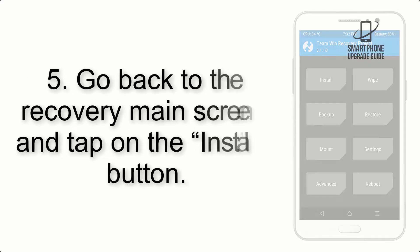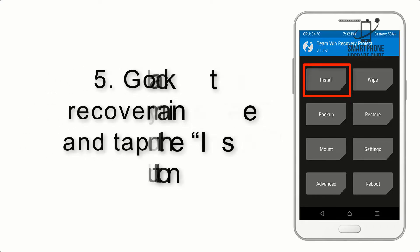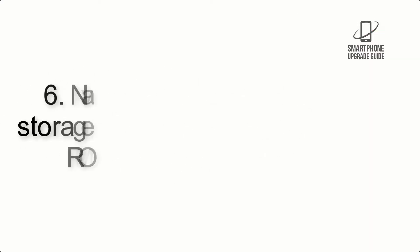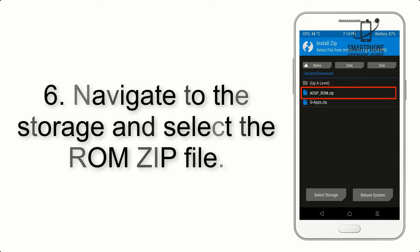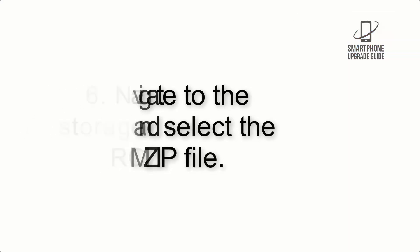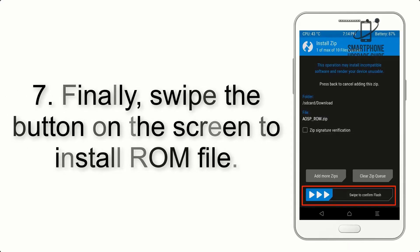Step 4: Swipe the button to wipe the device. Step 5: Go back to the recovery main screen and tap on the Install button. Step 6: Navigate to the storage and select the ROM zip file.